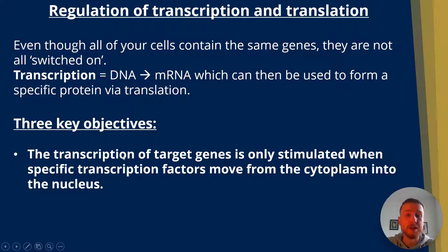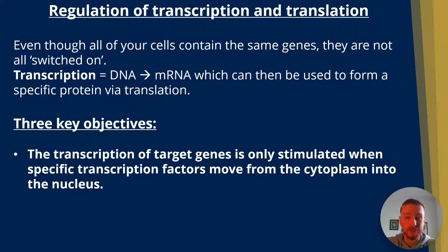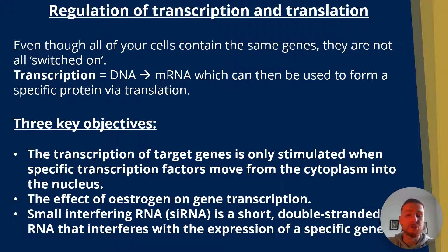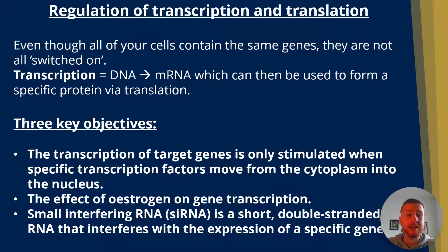The transcription of target genes is only stimulated when specific transcription factors move from the cytoplasm into the nucleus. The effect of estrogen on transcription is also important. Small interfering RNA, or siRNA, is a short double-stranded RNA that interferes with the expression of a specific gene. So those are the three key things to take from this video.